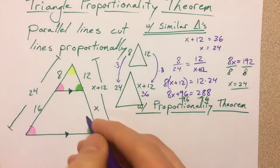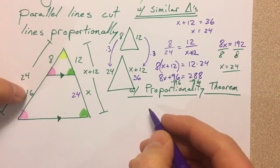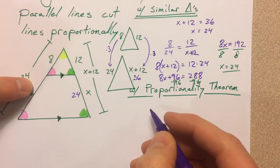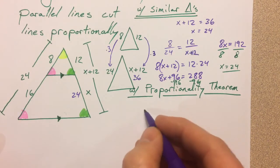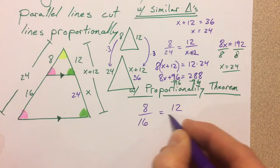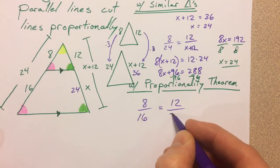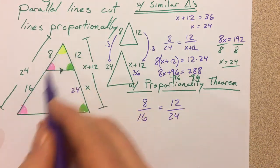All that to say is if this is 24, notice that you could just compare the pieces. When we say the parallel lines cut lines proportionally, we've got 8 compared to 16 and 12 compared to 24, and so you can just compare those pieces of it.